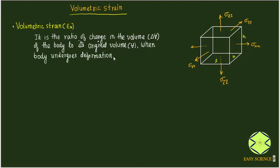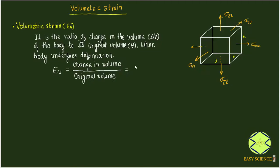It is a very simple concept: whenever stresses are applied on the body such that its volume changes, there will be volumetric strain in the body. To be very precise, volumetric strain is the ratio of change in volume to the original volume — that is, the basic definition.